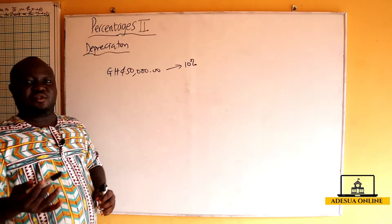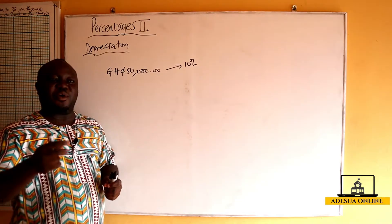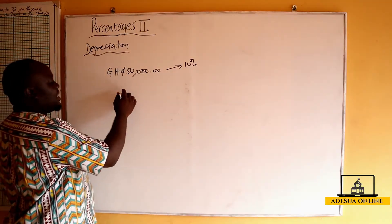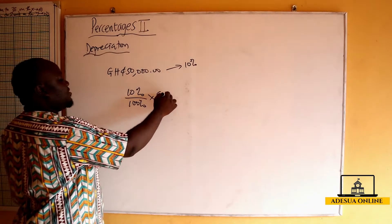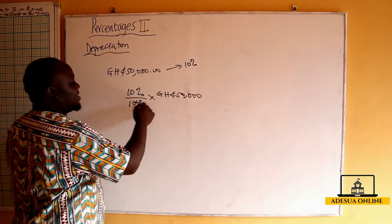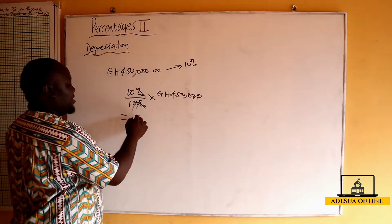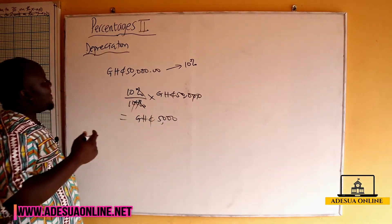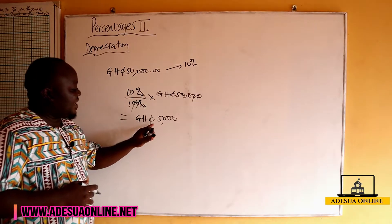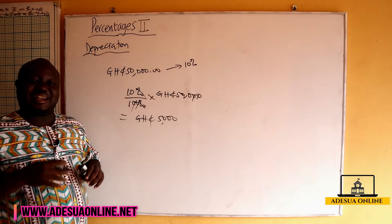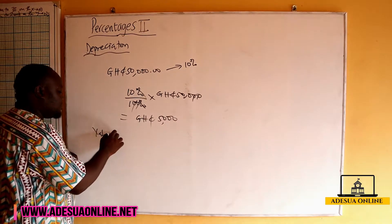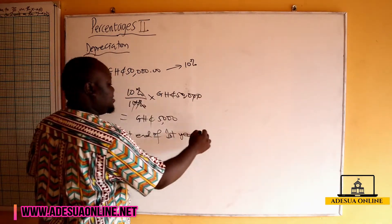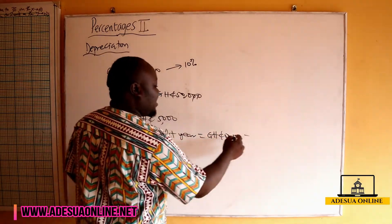If I want to find the value of the car after three years, I'm going to calculate depreciation per annum — every year — at 10 percent. So 10 over 100 times 50,000 gives us 500 times 10, which is 5,000. So in the first year the value of my car depreciated by 5,000. The value of the car at the end of the first year will be 50,000 minus 5,000.